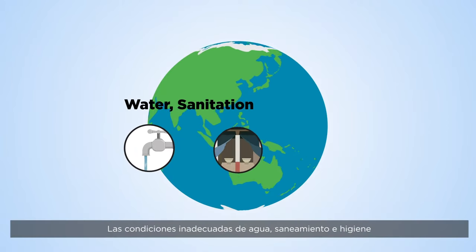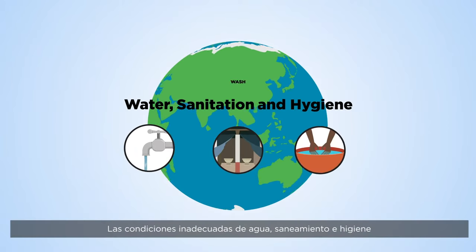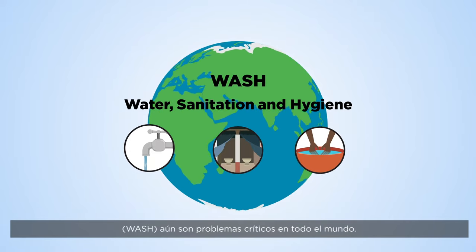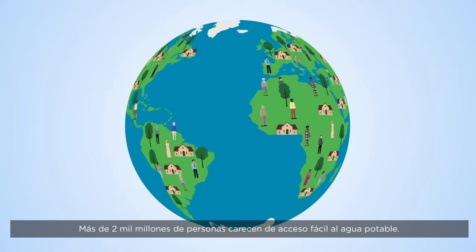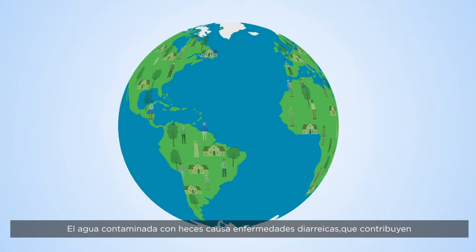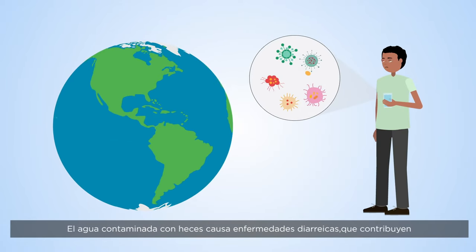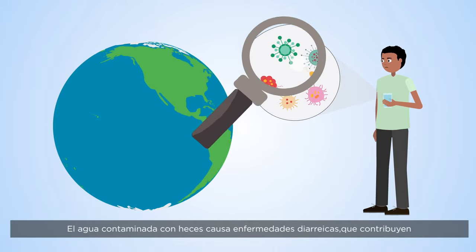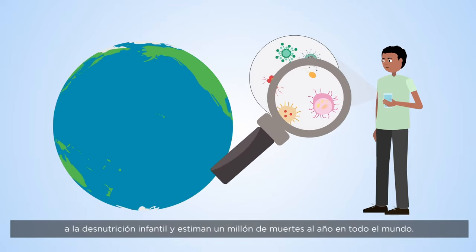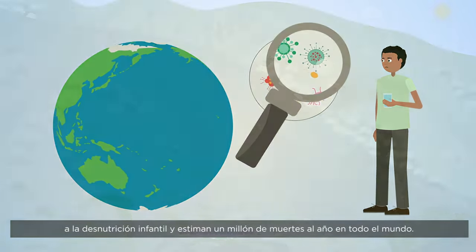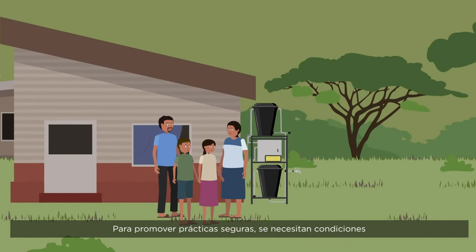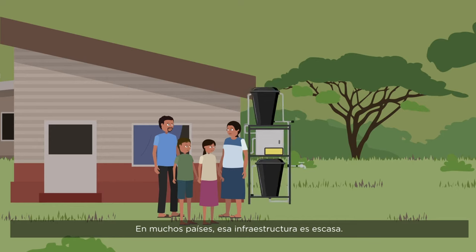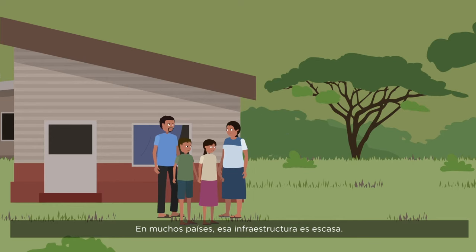Inadequate water, sanitation and hygiene remain critical problems worldwide. More than two billion people lack easy access to clean water. Fecally contaminated water causes diarrheal disease which contributes to child undernutrition and an estimated million deaths a year worldwide. To encourage safe practices, appropriate conditions are needed, for example in infrastructure. In many countries such infrastructure is poor.